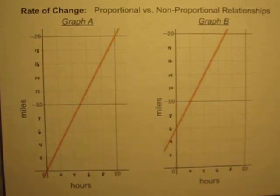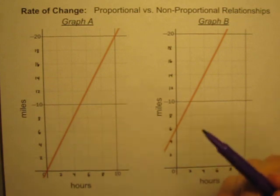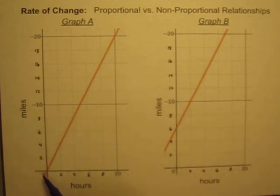Let's start with graph A. On graph A, it's a straight line. It has a constant rate of change. To calculate that rate of change, it's actually quite easy. I notice that this is something traveling in miles per hour. Its starting location is at mile zero.